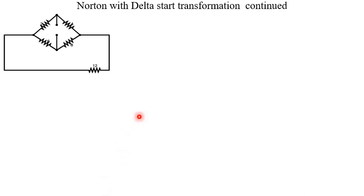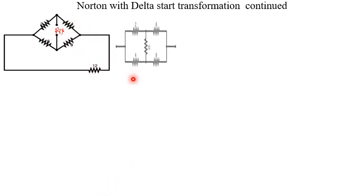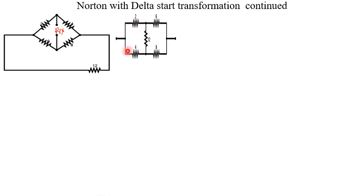To find the Norton resistance RN, we redraw our circuit to make it simpler — expanding it straight rather than the original shape, and bringing the 12-ohm resistor across. After redrawing, we identify a delta formed by 2 and 4, another delta formed by 6 and 8, and star configurations. We must choose a transformation that simplifies the circuit. I decide to convert one of the deltas to a star.